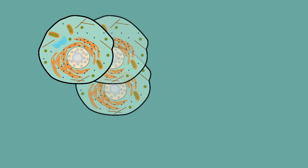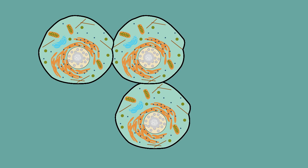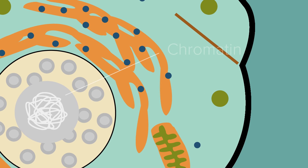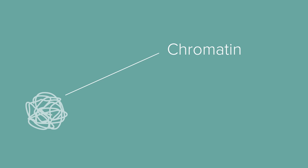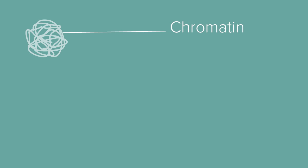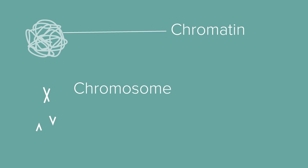When cells divide, they need to pass genetic information onto new cells. The genetic information in the nucleus is stored in long strings of DNA called chromatin. When cells prepare to divide, they organize their DNA. Chromatin is condensed down into structures called chromosomes. Chromosomes are split and passed on to offspring in order to pass a copy of DNA to newly formed cells.